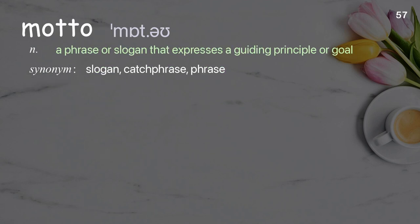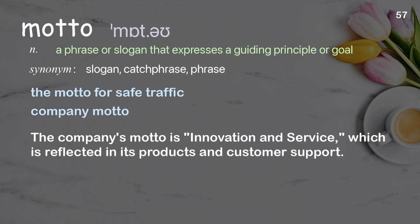Motto: A phrase or slogan that expresses a guiding principle or goal. Examples: The motto for safe traffic. Company motto. The company's motto is innovation and service, which is reflected in its products and customer support.